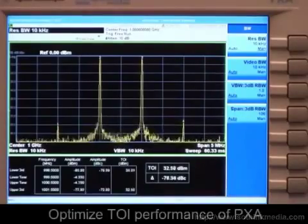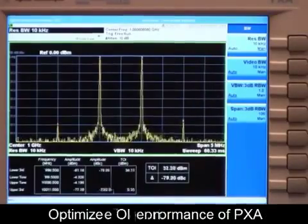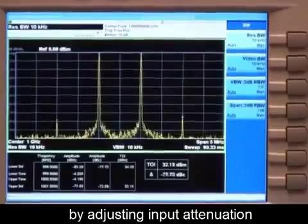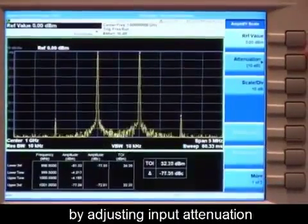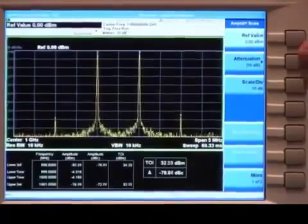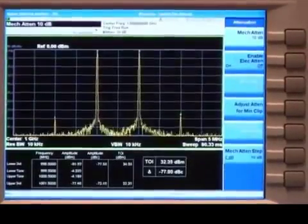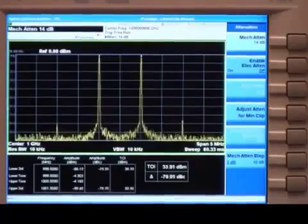Next I'm going to further optimize the performance of the PXA by adjusting the input attenuation under the amplitude menu. So what I'm doing now is optimizing the TOI performance of the PXA itself. I'll increase that in 2 dB steps until I see those intermodulation products drop down into the noise or as close to the noise as possible.